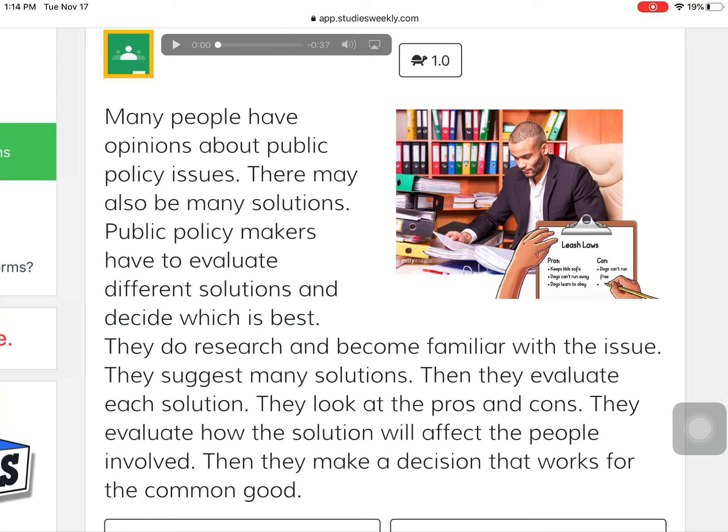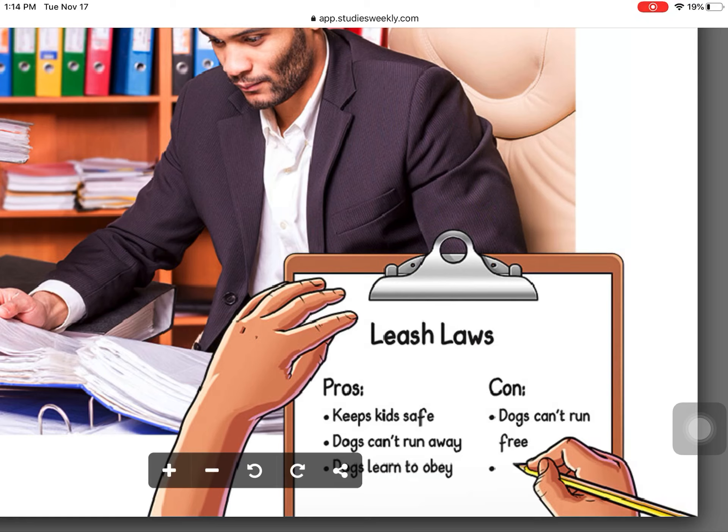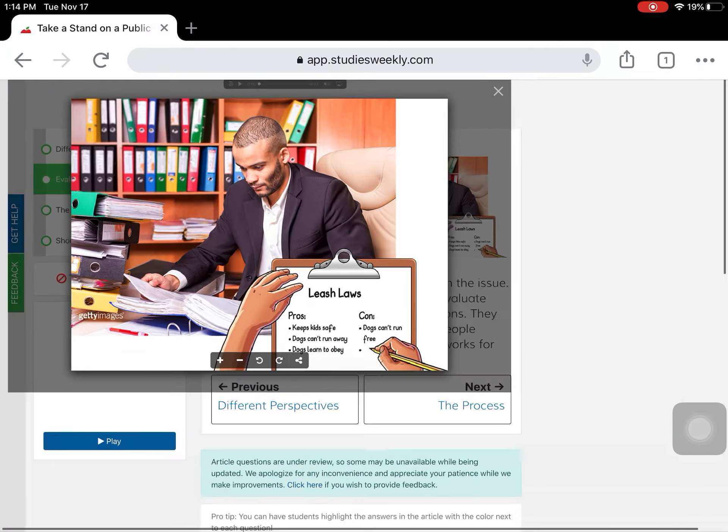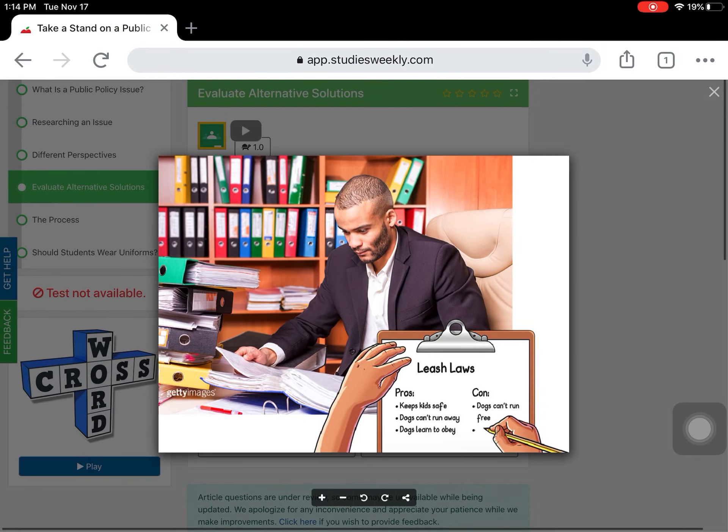Many people have opinions about public policy issues. There may also be many solutions. Public policy makers have to evaluate different solutions and decide which is best. They do research and become familiar with the issue. They suggest many solutions, then they evaluate each solution. They look at the pros and cons. They evaluate how the solution will affect people involved. Then they make a decision that works best for the common good, so works best for everyone. If you take a look at this picture here, I have a sign that says leash laws. So they're looking into the pros and cons of leash laws. So we have keep kids safe, dogs can't run away, dogs learn to obey are some of the pros. Con is dogs can't run free. So this is what we're going to be taking a look at as we continue on our writing here.